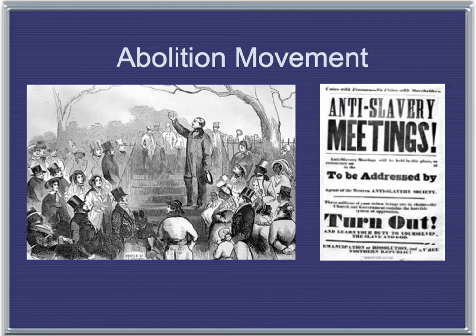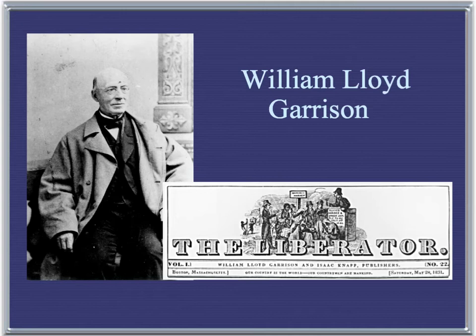The abolitionist movement continues to grow in strength throughout the 1830s, and by 1840 the Liberty Party is created — the first attempt to bring the issue of abolishing slavery into the political arena. One of the most ardent supporters of abolition was William Lloyd Garrison of Boston. In 1831, he established the anti-slavery newspaper The Liberator, where he called for the immediate and unconditional emancipation of Southern slaves.